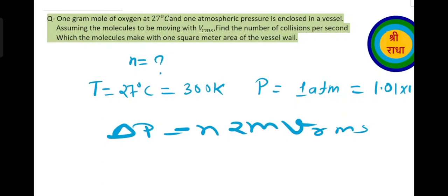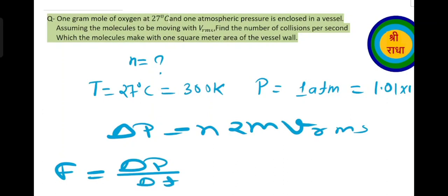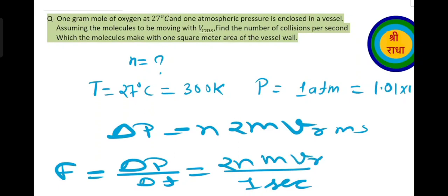We will find change in momentum, then apply Newton's second law: force equals rate of change of momentum. Time is 1 second. The total force on the wall area is 2N m Vrms, where N is the number of collisions per second.